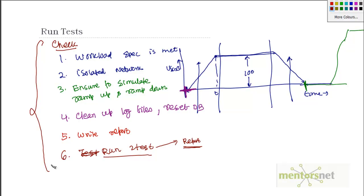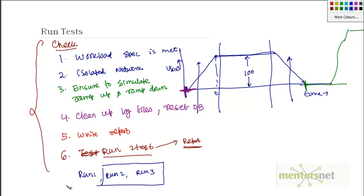Test execution never really finishes, but it gives diminishing returns as you keep executing the same test. Therefore, use your own judgment on when to stop. Generally, as I mentioned, I stop after I get two consecutive runs that I can trust. That is the process of test execution.